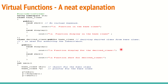Let me explain virtual functions with a code example — first the wrong way, so you can understand how to do it correctly. I have a base class with a function 'show' printing 'function show in the base class' and a function 'display' printing 'function display in the base class.' In the derived class, I derive from it and override both functions with derived class versions.